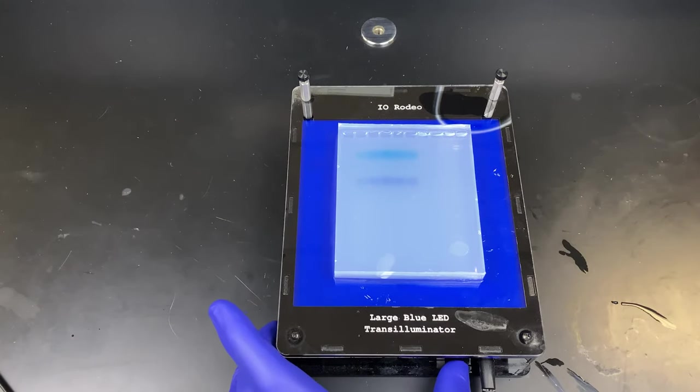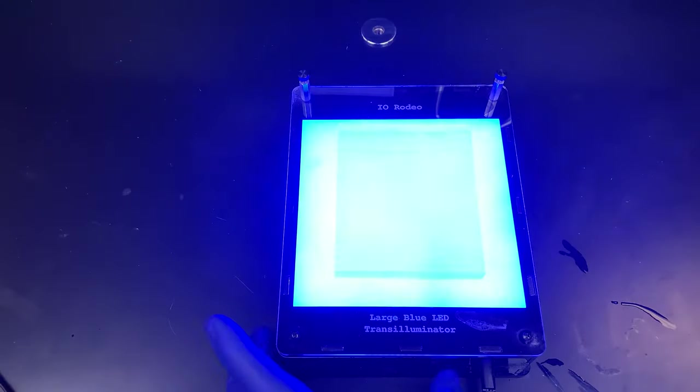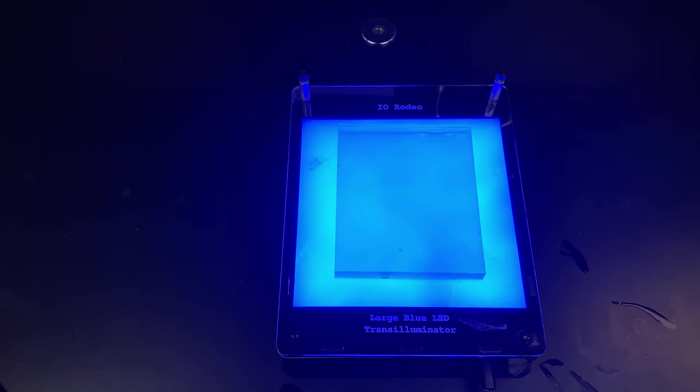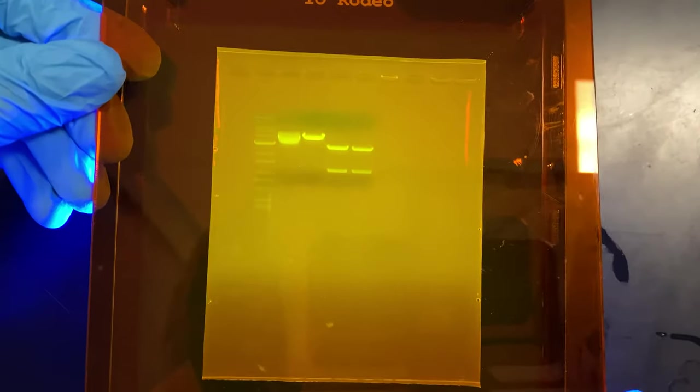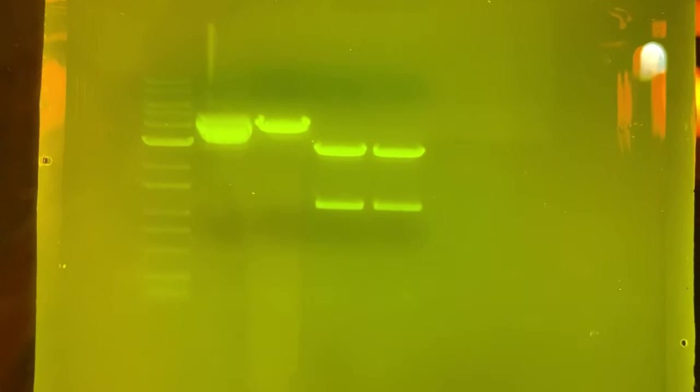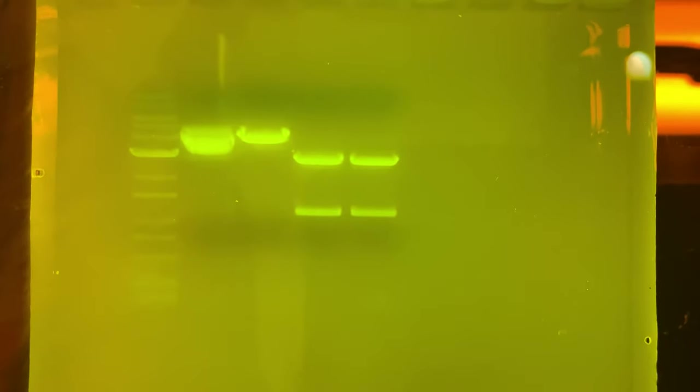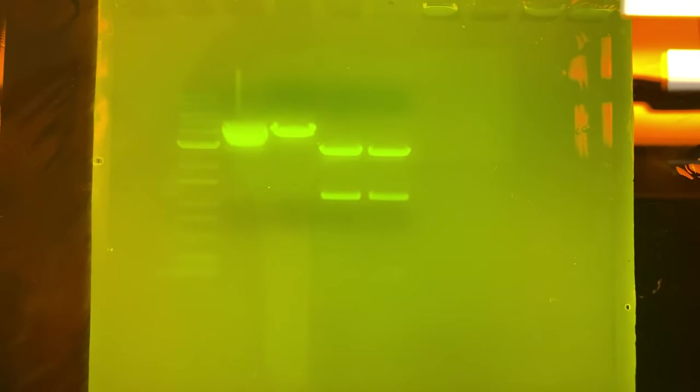We have the gel on a light box now. With RedSafe, we can use this blue LED. We turn it on. You can't see anything right now. It's illuminating the RedSafe inside the gel. We add this filter, and there you have it. You can see the ladder, our uncut plasmid, and our cut plasmid. Smaller fragments run further down the gel compared to larger fragments.